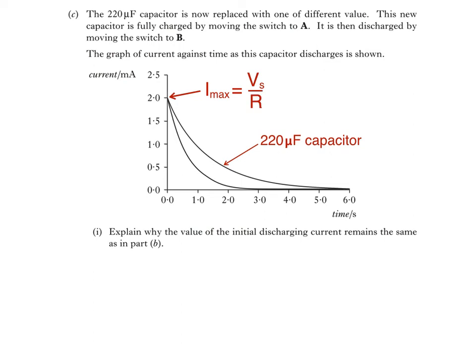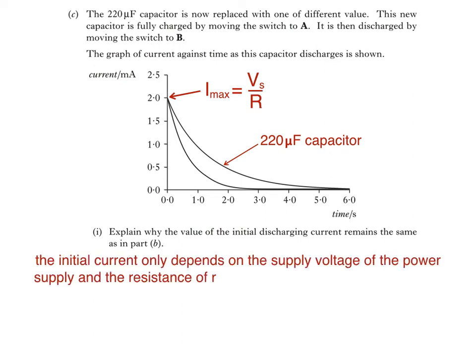We could write something like this: The initial current only depends on the supply voltage of the power supply and the resistor R, both of which are constant.